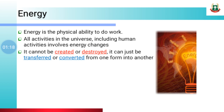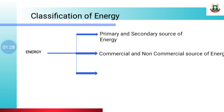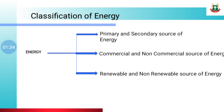We classify energy in three ways: Primary and Secondary Source of Energy, Commercial and Non-Commercial Source of Energy, and Renewable and Non-Renewable Source of Energy.